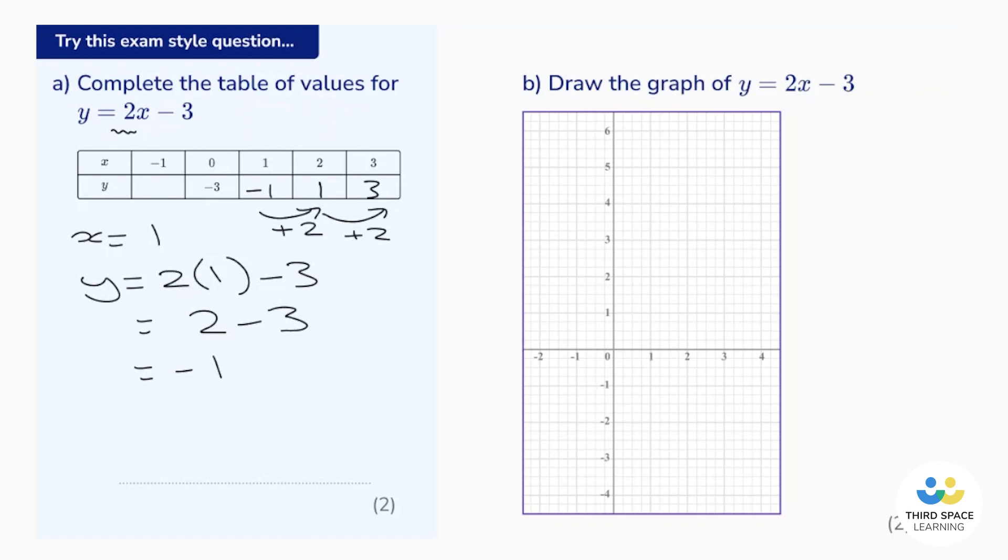Let's just check going the other way. Negative 3 add on 2 is negative 1, so that's good. Now we still have a missing value here. So a number add on 2 is going to be negative 3. Well, that's going to be negative 5. That's worth two marks. We're going to get one mark for any 2 correct, and the final mark is for all 4 correct.